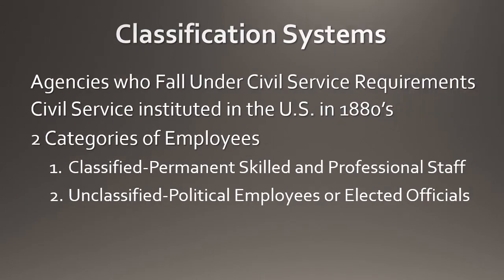An important side note: any agency that falls under civil service requirements instituted in the 1880s needs to maintain two categories of employees — classified permanent skilled and professional staff, and unclassified political employees or elected officials. Classified employees interview for positions with certain credential skill sets and hold those positions regardless of political elections or appointees. Unclassified or political employees — such as appointees from the governor on down — do not necessarily interview with a skill set; they are appointed to a position.